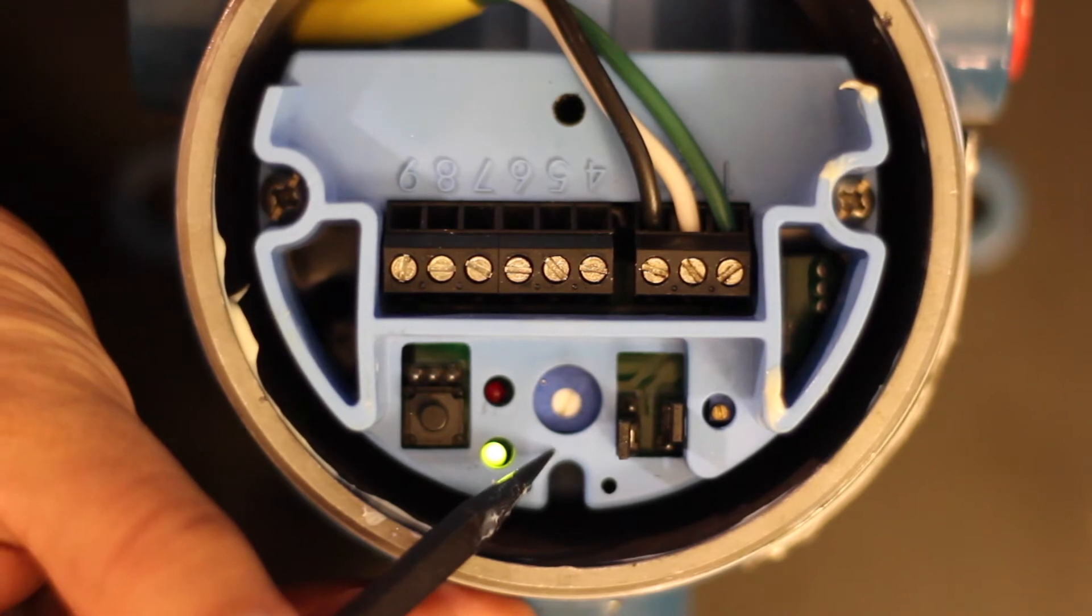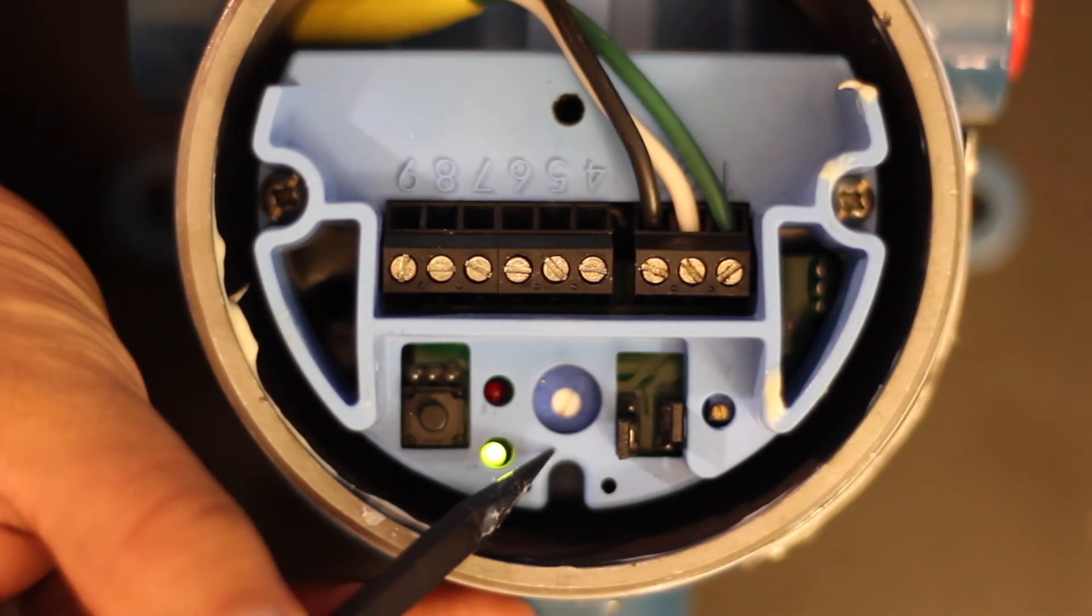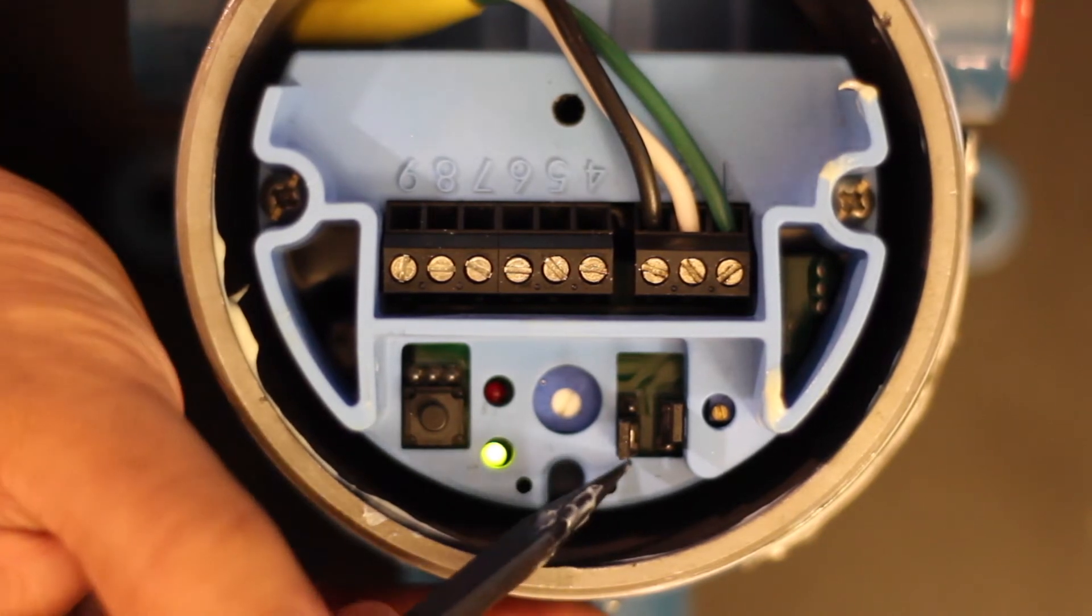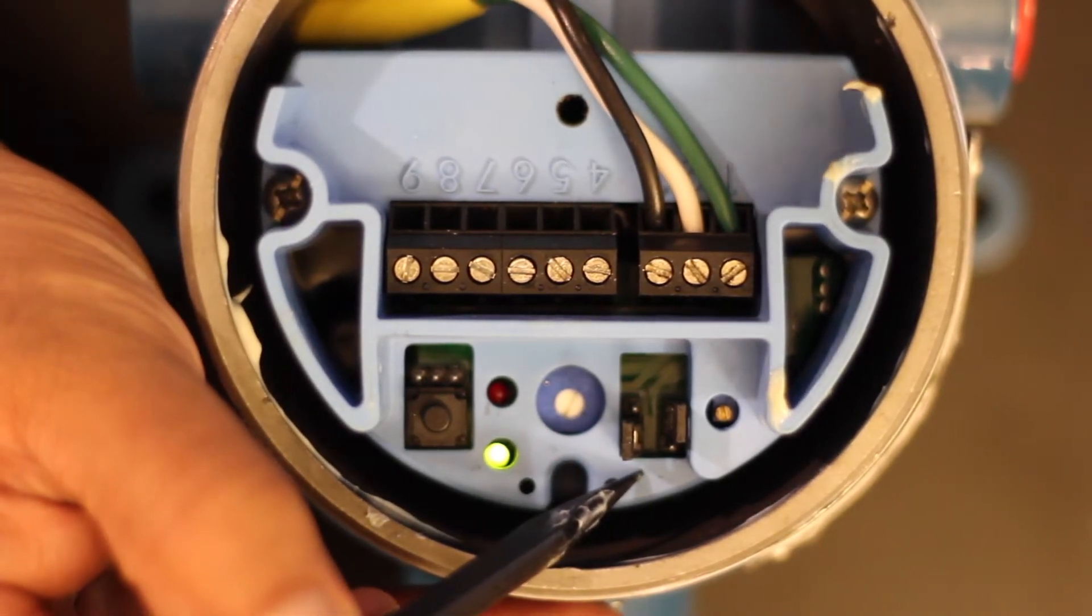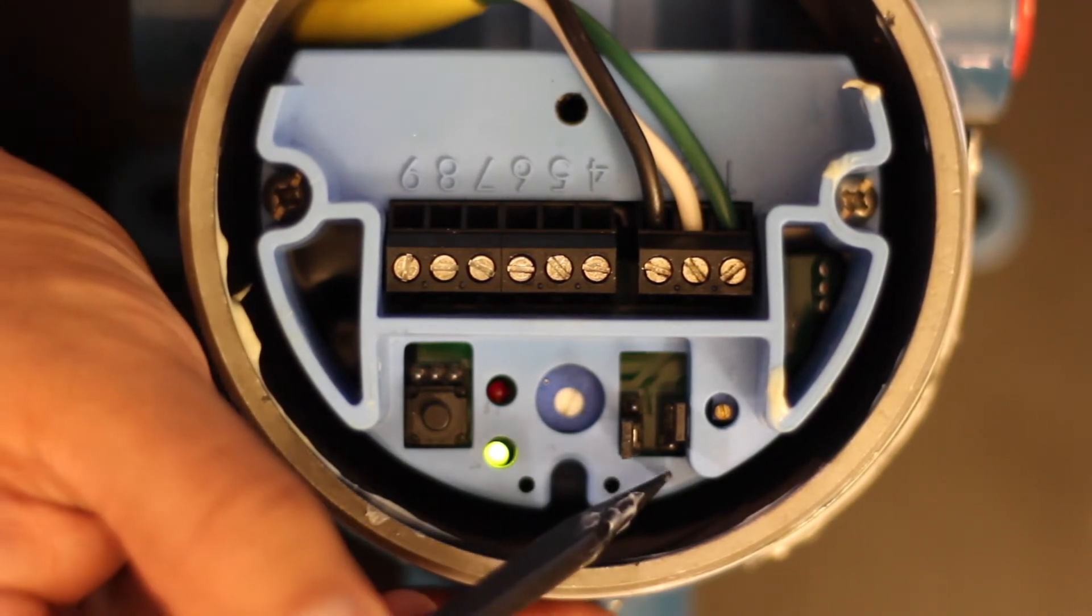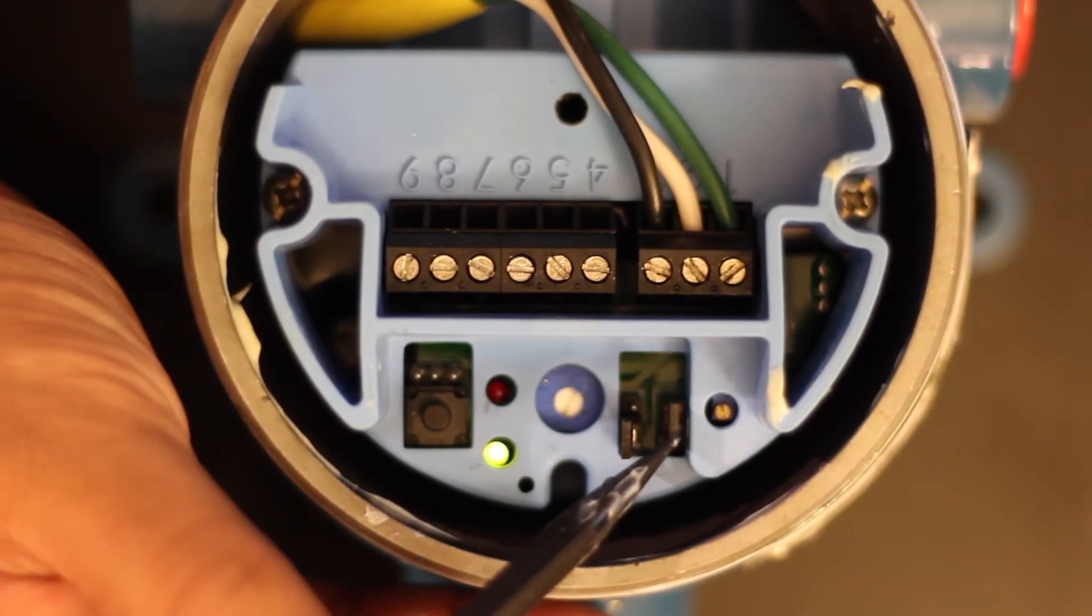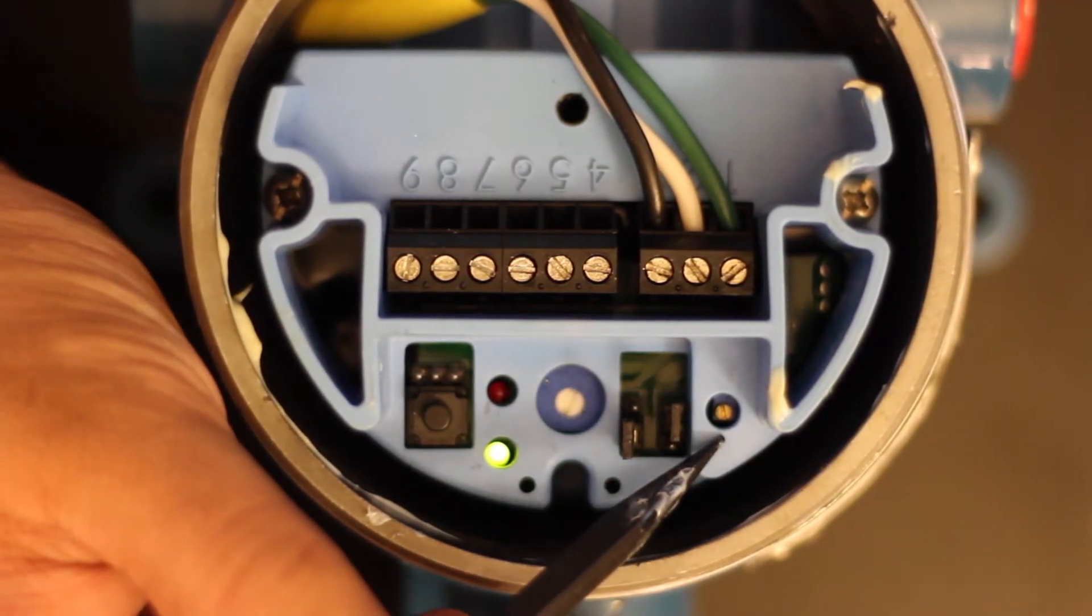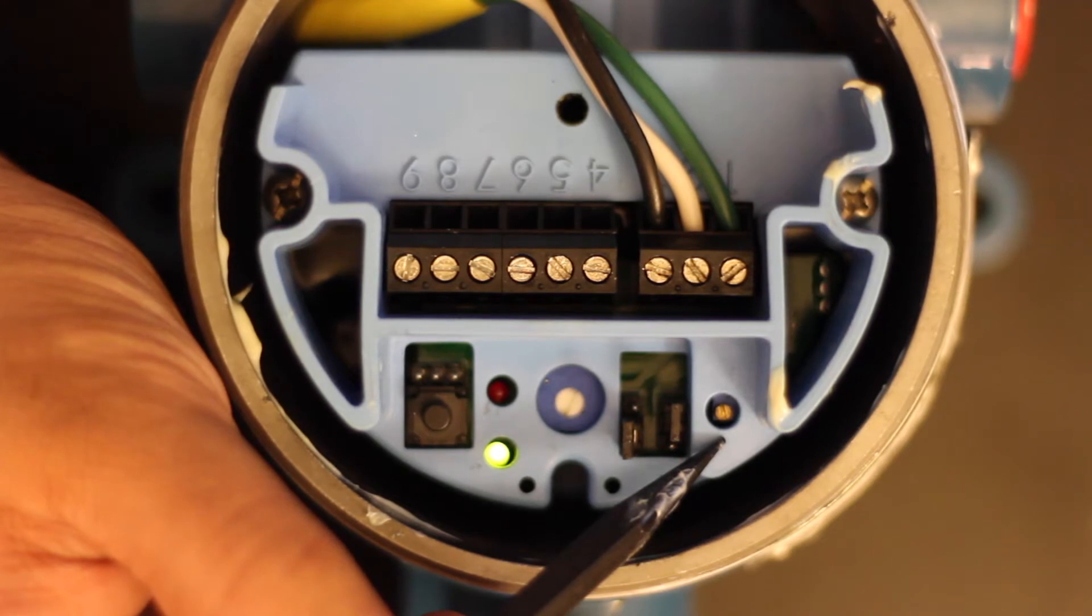In the middle we have a 0 to 60 second, 270 degree time delay pot. Moving over, we have our fail safe jumper to indicate high level or low level fail safe. Next up, you have your time delay jumper. This is for forward or reverse acting time delay. And lastly, if you are in manual calibration, this is your manual calibration adjustment pot.